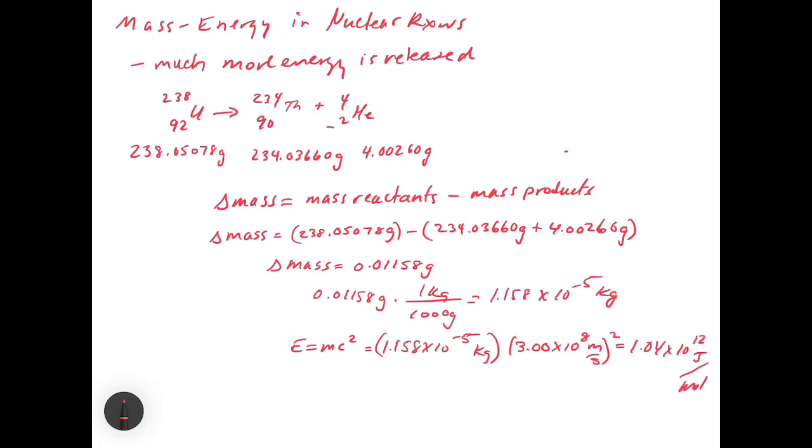which is a massive amount of energy, and this is joules per mole in this case, because we are treating this as 1 mole of uranium, 1 mole of thorium, and 1 mole of alpha particles. If we were to have 1 mole of uranium, or 238 grams of it, all undergo an alpha decay, all at the same time, we would get out 1.04 times 10 to the 12th joules.